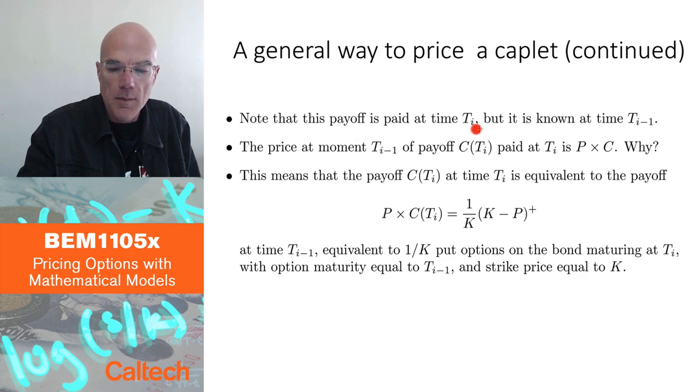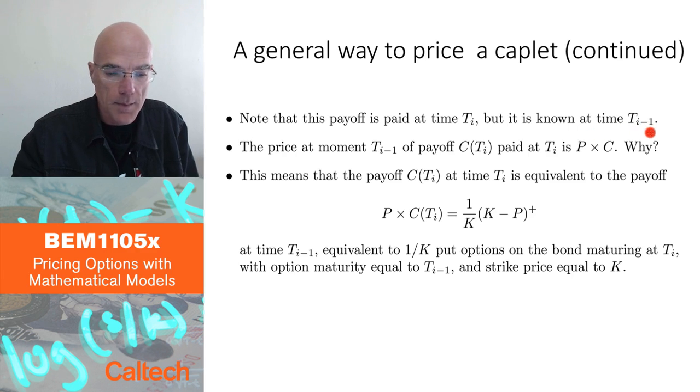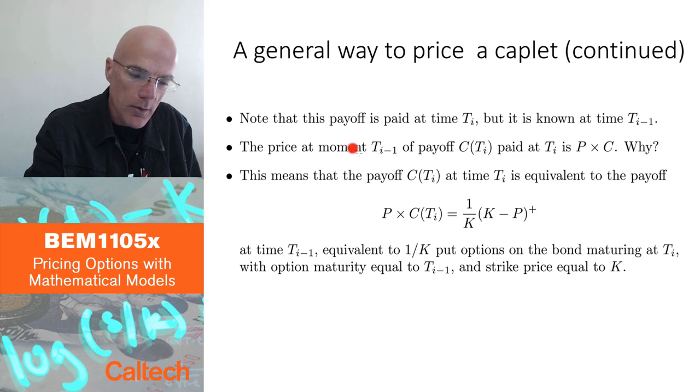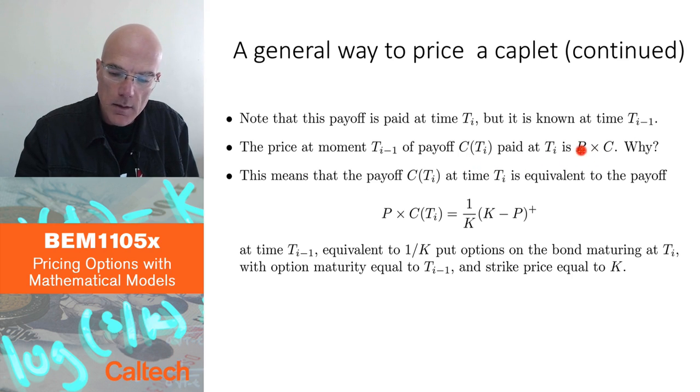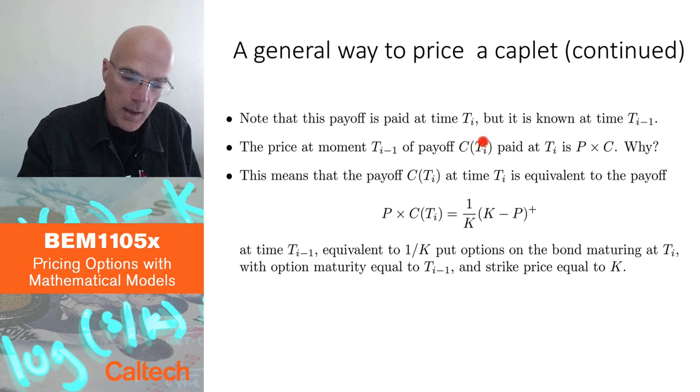So this payoff is paid at time Ti, but it's known at time Ti minus 1. I claim that any payoff which is paid at time Ti, but whose price is known at time Ti minus 1, then its value at time Ti minus 1 is the bond price at Ti minus 1 times the payoff. I just write C, but C is C of Ti. Why? Why is the value at Ti minus 1 of this payoff at Ti, which is known at Ti minus 1 but paid at Ti, why is it P times C?